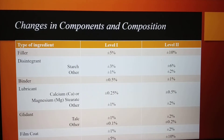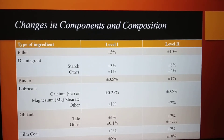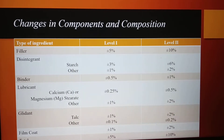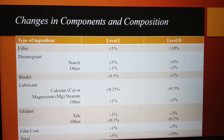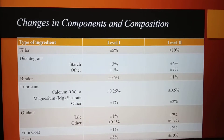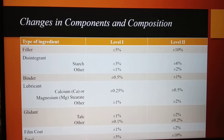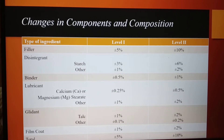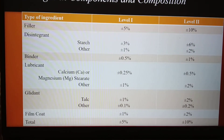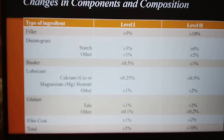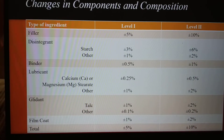To summarize, as per SUPAC Level 1 change: the filler concentration is allowed to be changed up to 5%. For disintegrant, starch is 3% and other disintegrants 1%. For binder it's 0.5%. For lubricant — calcium or magnesium stearate — it's 0.25%, and other lubricants 1%.